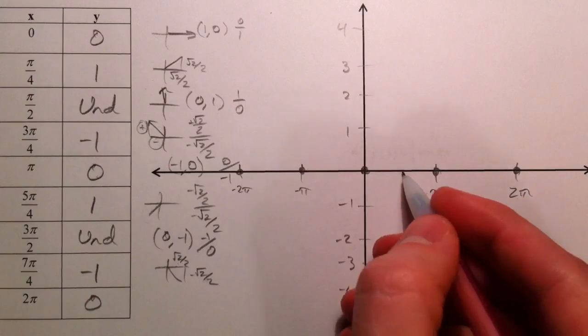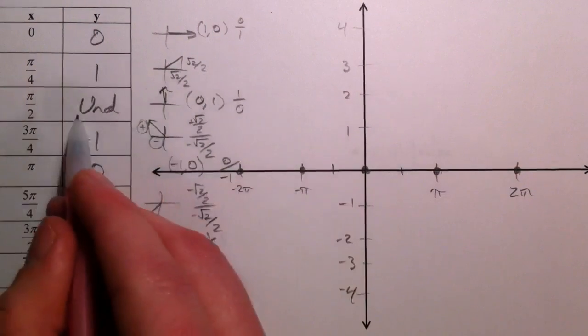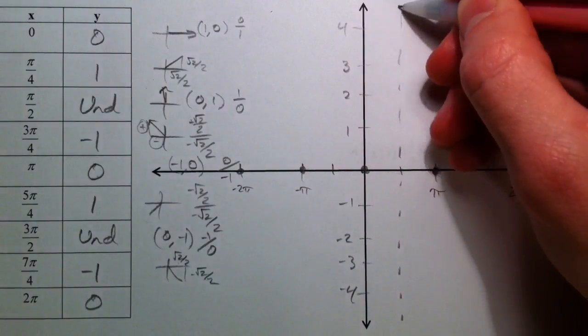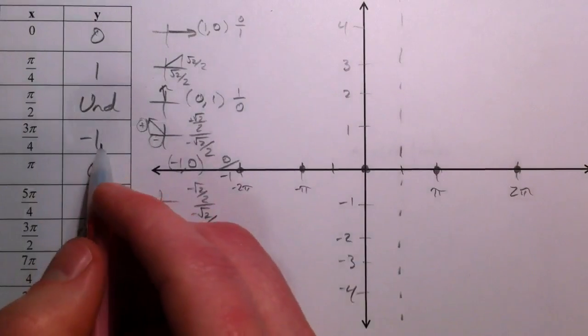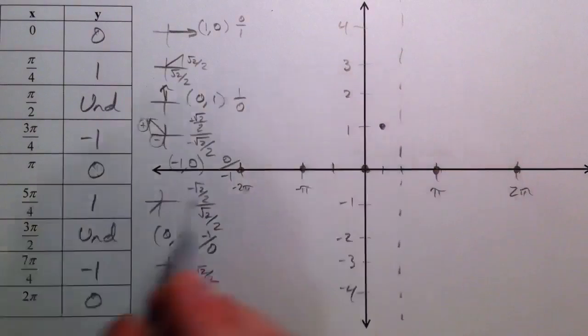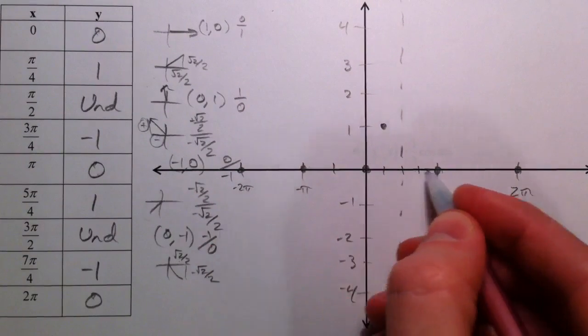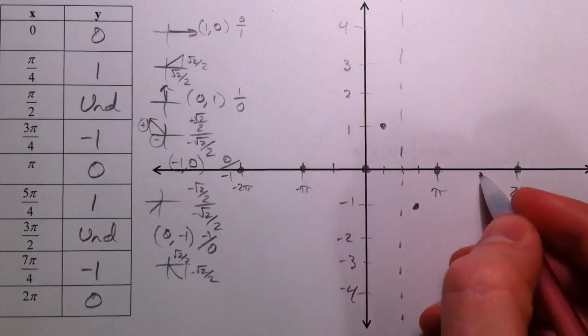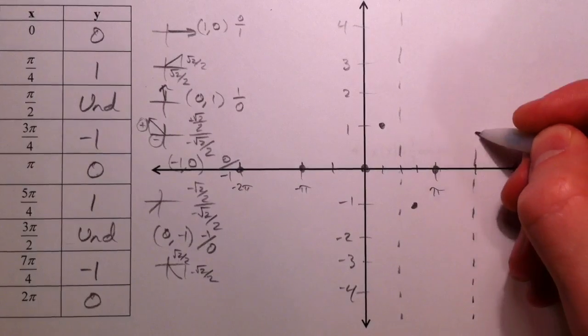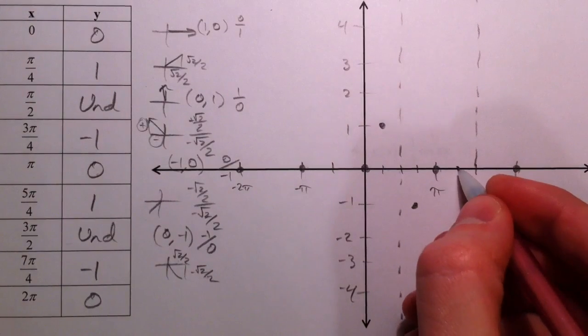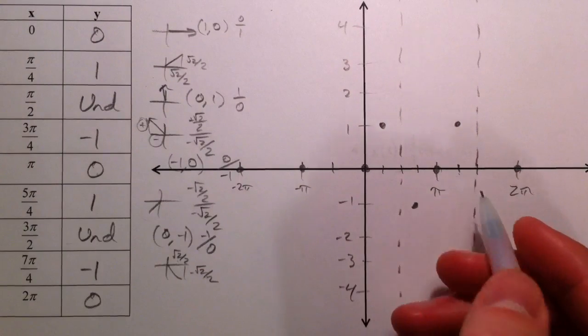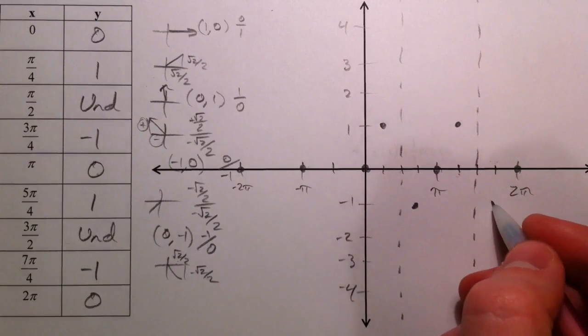When x is pi over 2, or negative pi over 2, that's undefined. That's going to be an asymptote. Notice that when x is half of that, you get 1. When we go past that, 3pi over 4, x is negative, y is negative 1. 3pi over 2 is undefined again, so I'm going to put an asymptote there. We get another positive 1 at 5pi over 4, and another negative 1 over here.